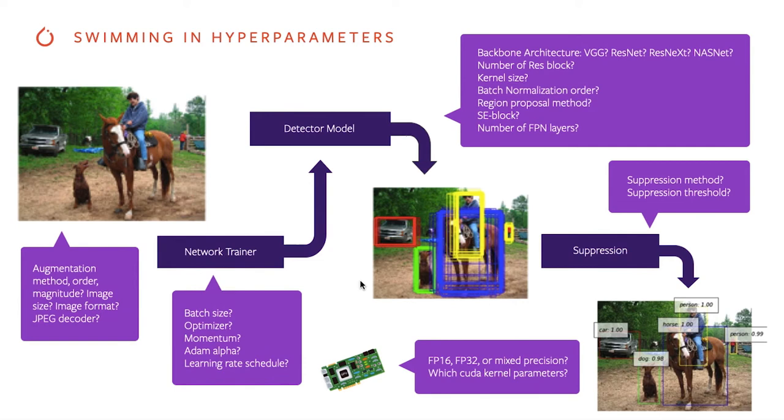But these are not the only hyperparameters. There might be more than you thought of before. If you just take a look at the image itself, there's the encoding that's used for the image, also the order, the image size that's used, or the JPEG decoder. Then within the neural network trainer there's the batch size, what optimizer is chosen: stochastic gradient descent, Adam, momentum, or others.